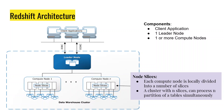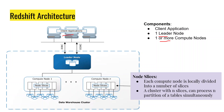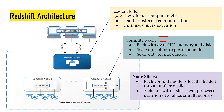Now let's look at the Redshift architecture. We have three main components. First, the client application — that's us — connecting via JDBC or ODBC from our PC or any programming language. Then we have the leader node, which interacts with the client, coordinates and manages the other nodes, handles external communication, and optimizes queries. Finally, we have one or more compute nodes, which actually compute all the queries. Each compute node has its own CPU, memory, and disk.